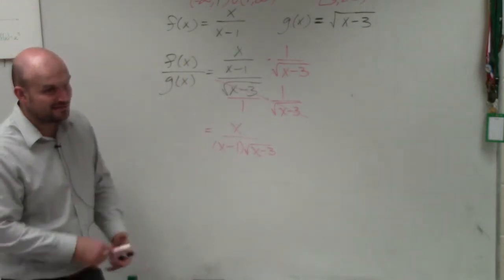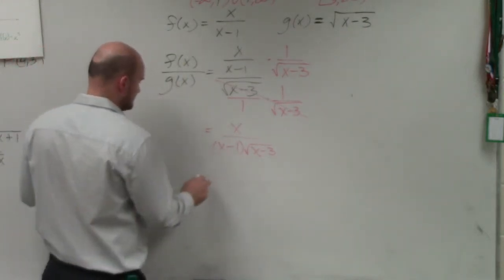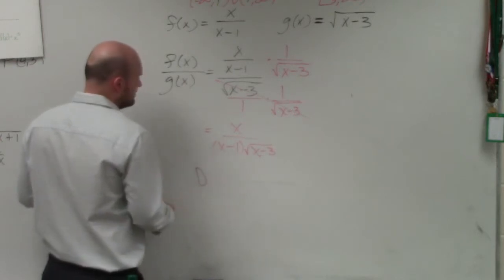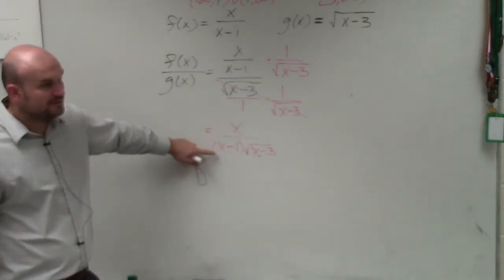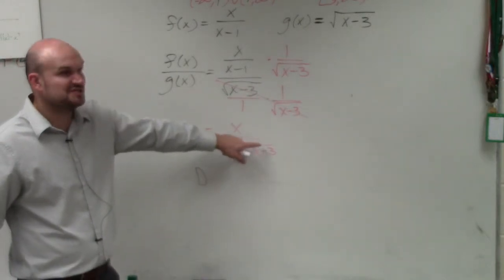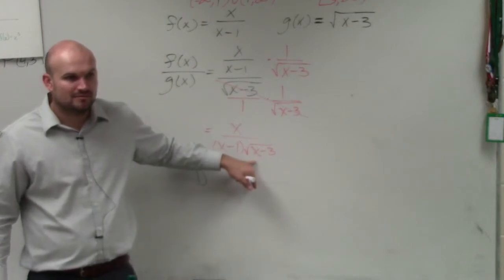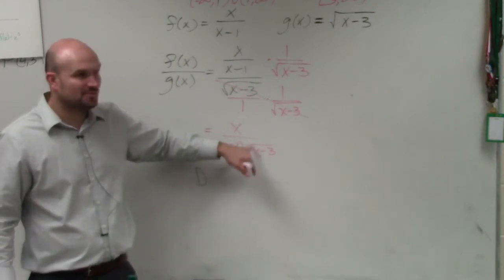But now let's go and look into the domain. And this is very important. Because, Jacob, you brought this up. The domain, we know that this can't equal 1. And we remember here the domain is 3, 0. But what happens when we have 3 here? We get 0. Can 0 be in the denominator?